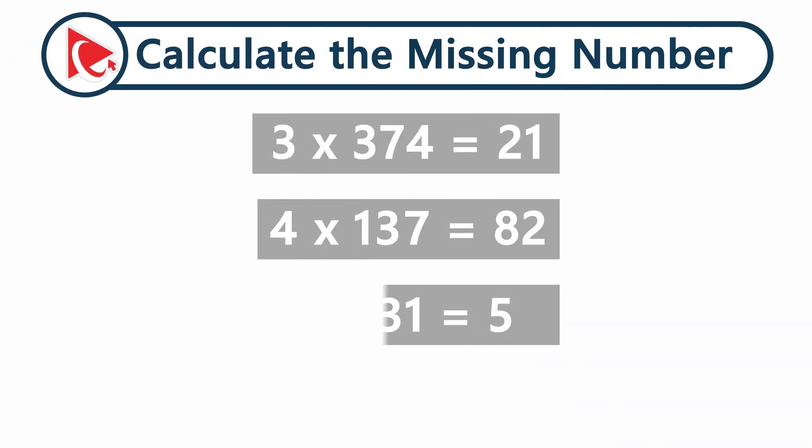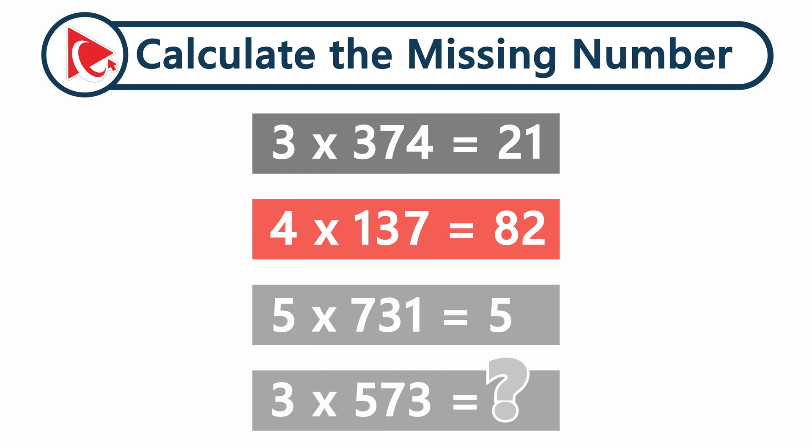You're presented with four expressions. 3 multiplied by 374 equals 21. 4 multiplied by 137 equals 82. 5 multiplied by 731 equals 5.